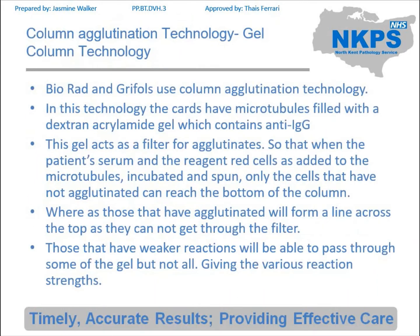We're going to start off with column agglutination technology and specifically gel column agglutination technology. Currently in the hospitals we are both using gel column agglutination technology. In this technology you get a card which will be specific to what test you're doing. So if you're doing ABO grouping then you will get a card which has reagents for ABO — it'll have the antiserum in the card and then it will add in a reagent with red cells on it. This is because generally the stability of the red cells is not good enough to keep it within the card.